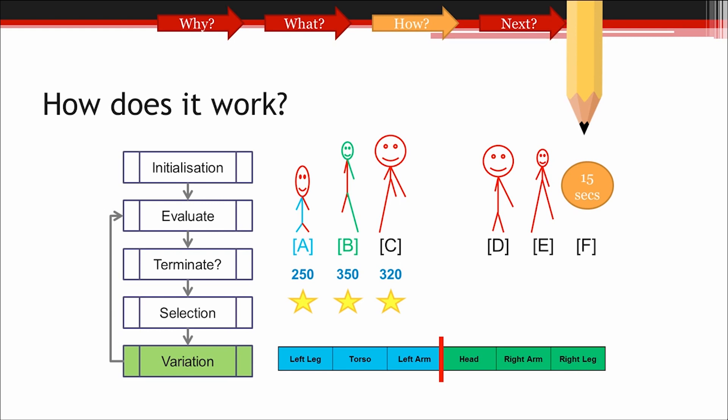And now, it's time for the quick activity. If you want to take part, please just use a pen and paper to sketch out what you think offspring solution F will look like. Your 15 seconds start now.